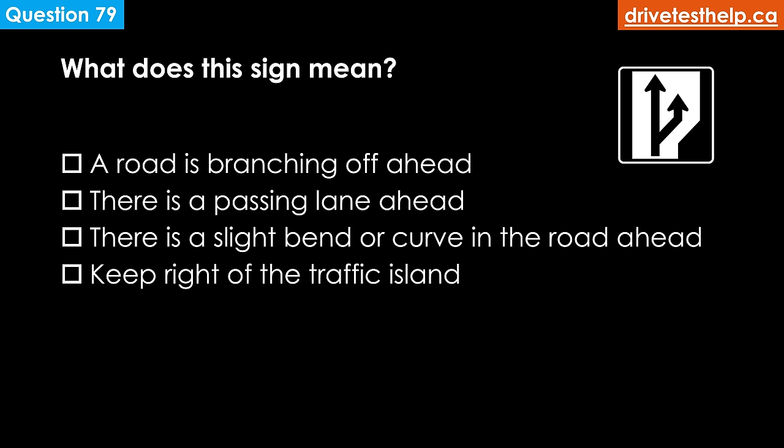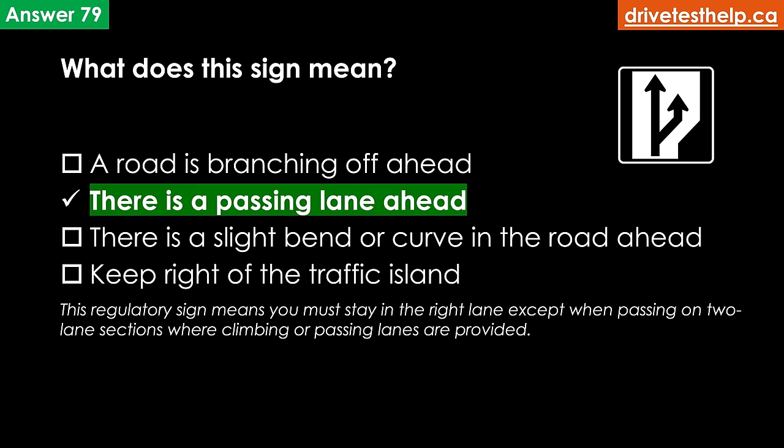What does this sign mean? Options: a road is branching off ahead; there is a passing lane ahead; there is a slight bend or curve in the road ahead; keep right of the traffic island. The correct answer is there is a passing lane ahead. This regulatory sign means you must stay in the right lane except when passing on two-lane sections where climbing or passing lanes are provided.